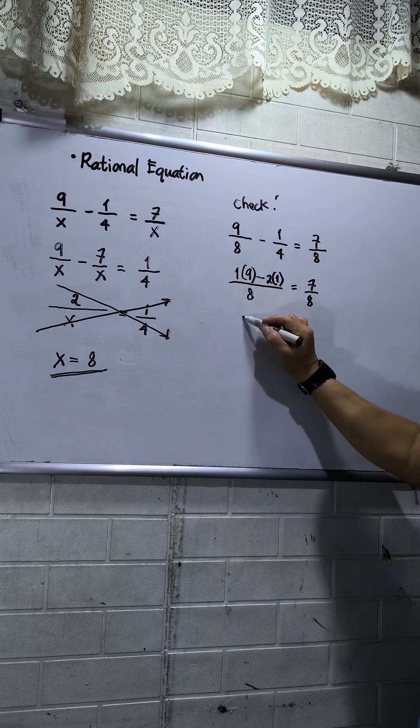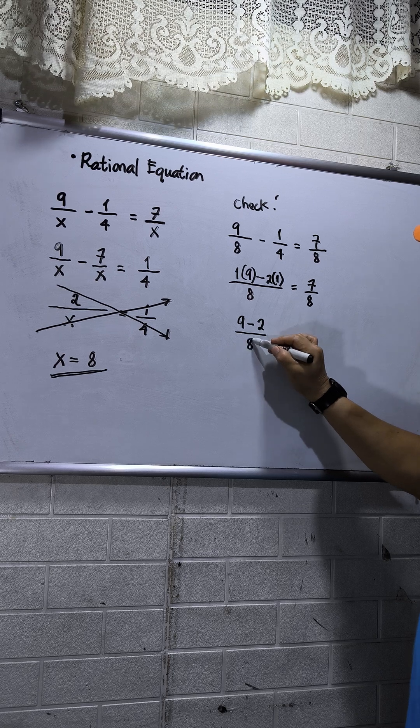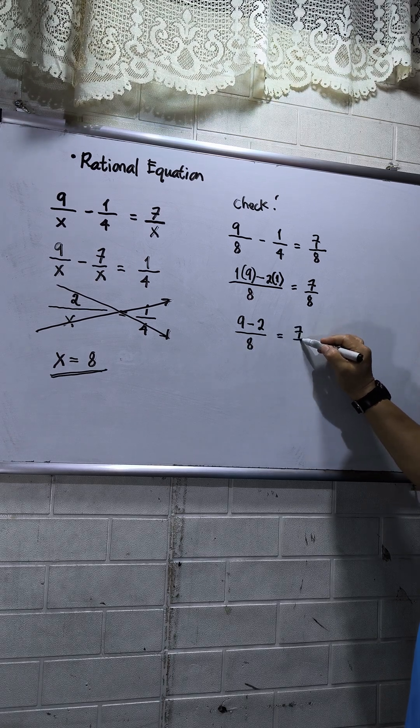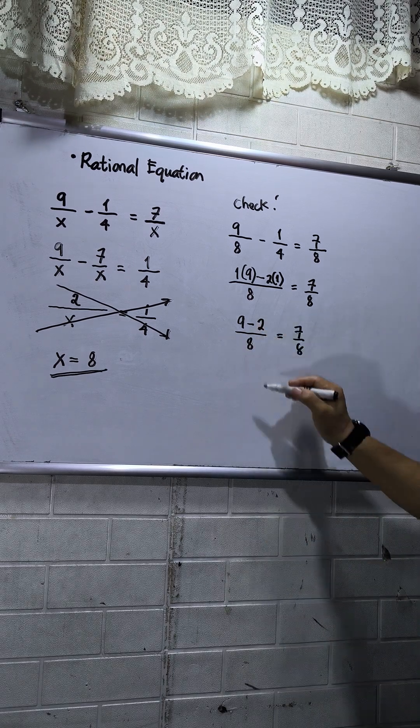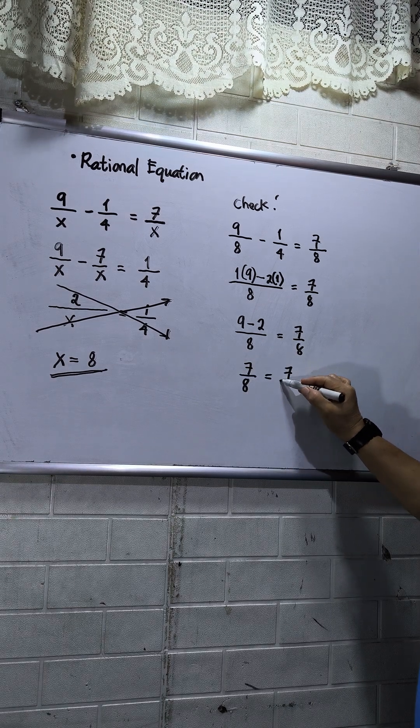So 1 times 9, that will be 9. 2 times 1, that will be 2. Then this will be over 8. This will be equal to 7 over 8. So 9 minus 2, that is 7 over 8, equals 7 over 8.